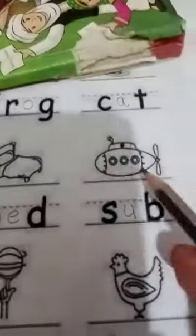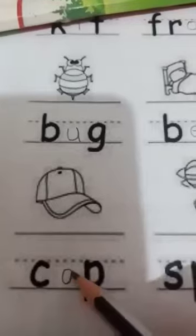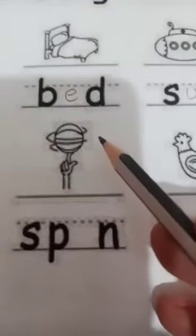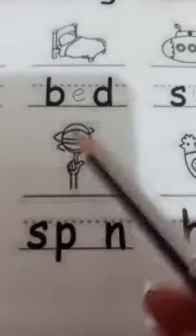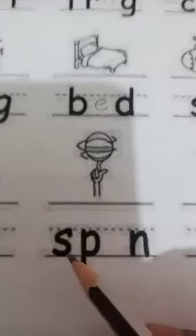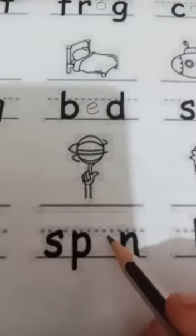Sub. S-U-B, sub. Submarine hoti hai na. Cap mein O hai. C-A-P, cap. What is this? This is cap. Spin. S-P-I-N, spin.